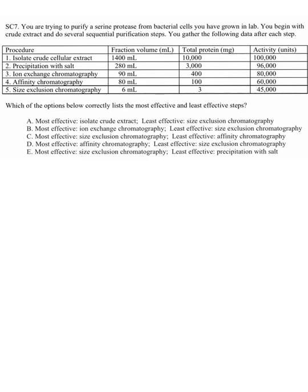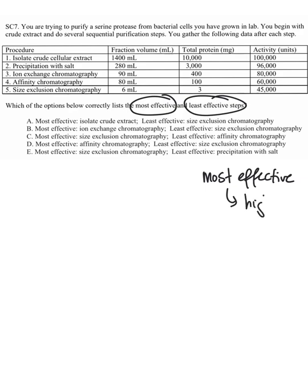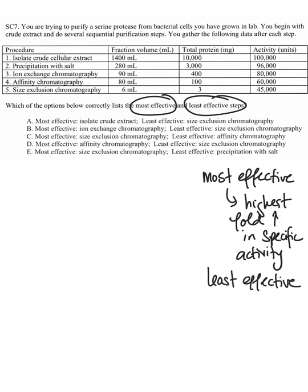I wanted to do a video for a purification table type problem where you're asked to identify the most effective and least effective steps. The most effective step is the step that gives you the highest fold increase in specific activity. The least effective is whichever step causes you to lose your enzyme the most — the worst thing that can happen during a purification is losing your precious enzyme, because you can never get it back once you lose it.